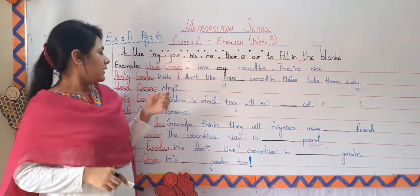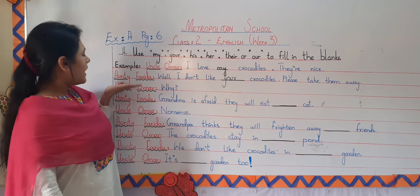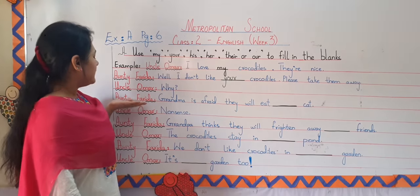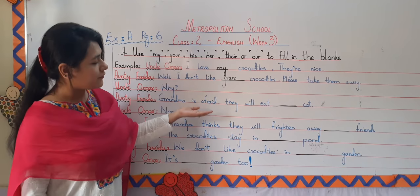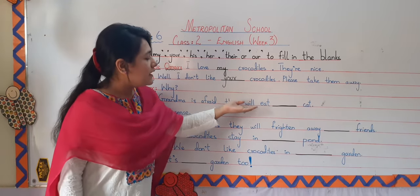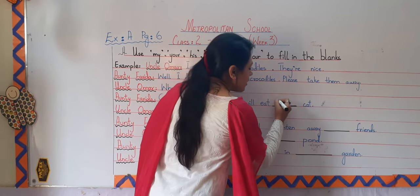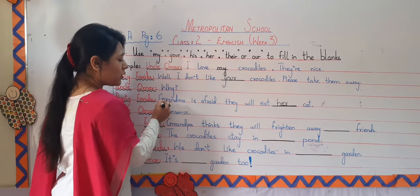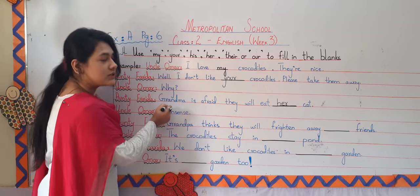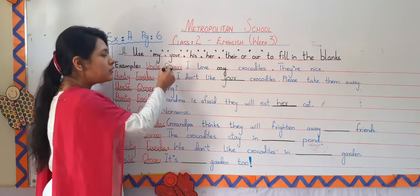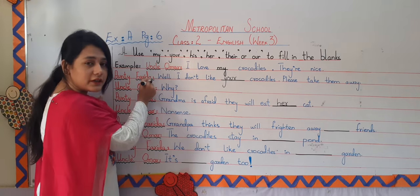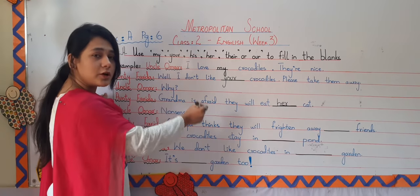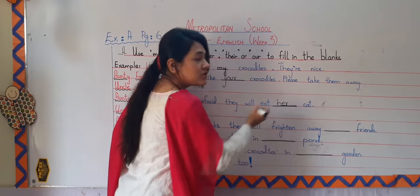Then Uncle Umar asked, 'Miss Aunty Farida, why?' Then Aunty Farida said, 'Grandma is afraid that they will eat her cat.' Because here we are talking about the third person. First person is Uncle Umar. Uncle Umar is talking with Aunty Farida about Grandma. That's why Grandma became the third person and this is why we use 'her.'